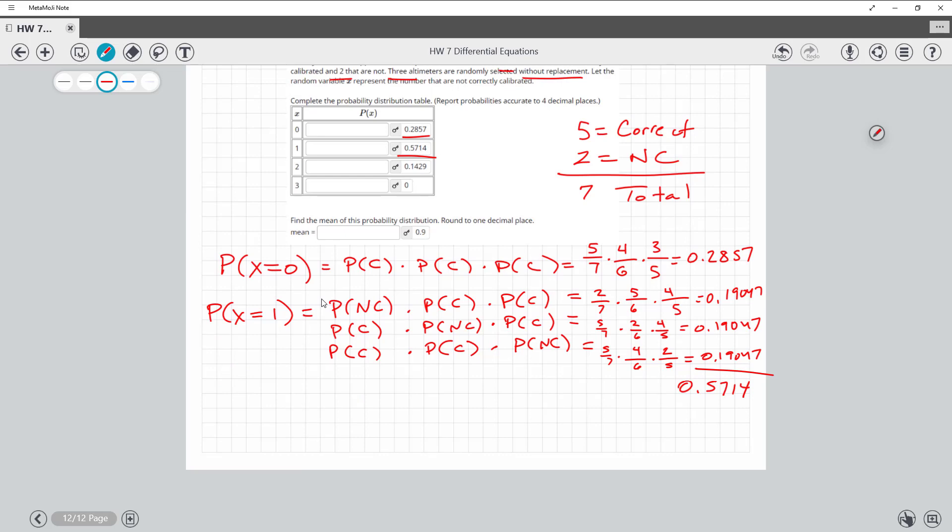And the same thing happens where if I have the probability x equals two are bad. Well, if two are bad, that means that one's bad and that one's bad, right? And then the next one's good. But then again, the order might matter. Bad, good, bad, good, bad, bad, bad. And so once again...